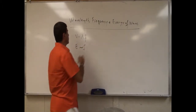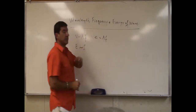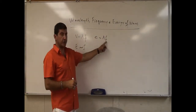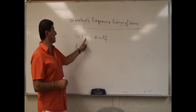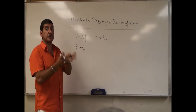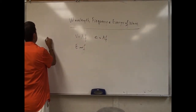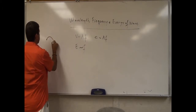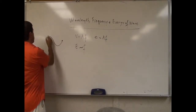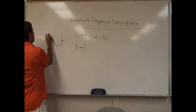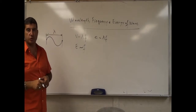For electromagnetic waves, the velocity — the speed of light — is equal to the wavelength of the electromagnetic wave times the frequency of the electromagnetic wave. The wavelength is the distance between a certain point on the wave and when that point begins to repeat. This is called the wavelength of a wave, and it has the symbol lambda, the Greek letter lambda.